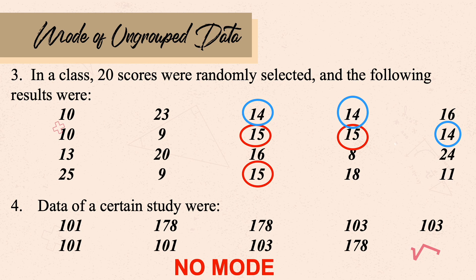That's how you get the mode — you simply identify the most frequently seen value in the given data set.